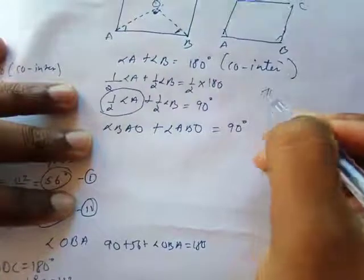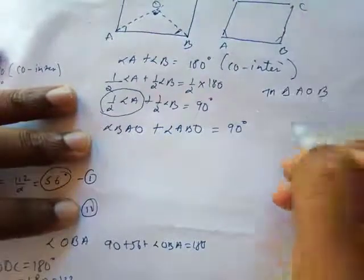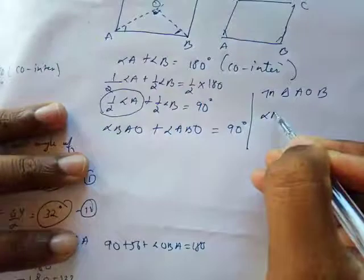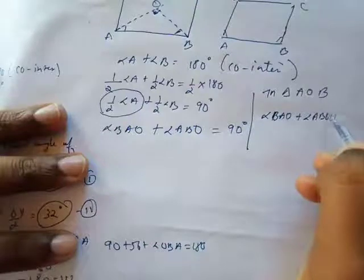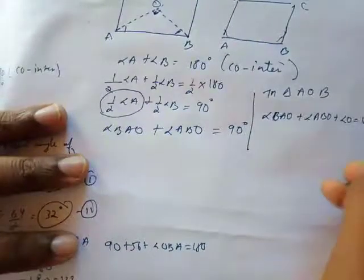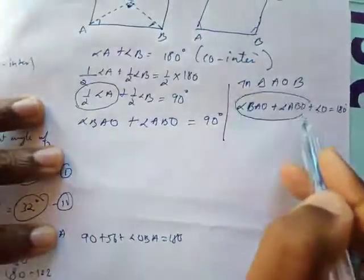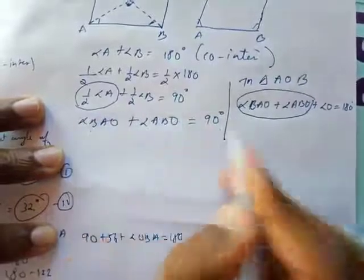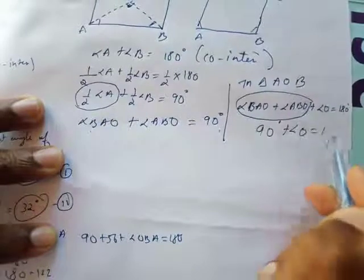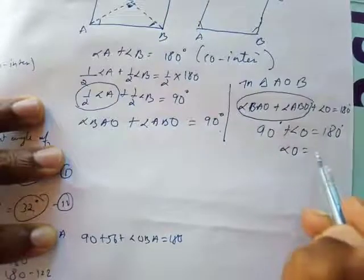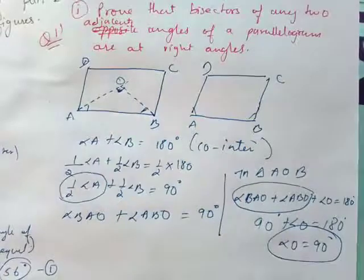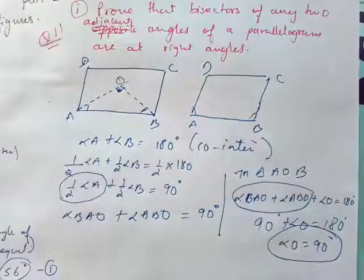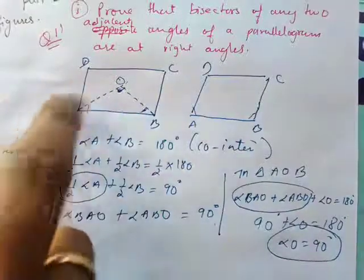In triangle AOB, angle BAO + angle ABO + angle O = 180° by the angle sum of a triangle. But we already know angle BAO + angle ABO = 90°, so angle O = 90°. This proves that the bisectors of any two adjacent angles of a parallelogram meet at right angles.